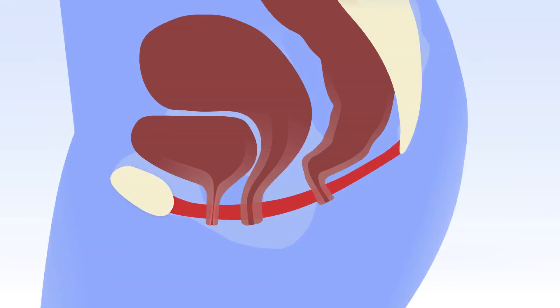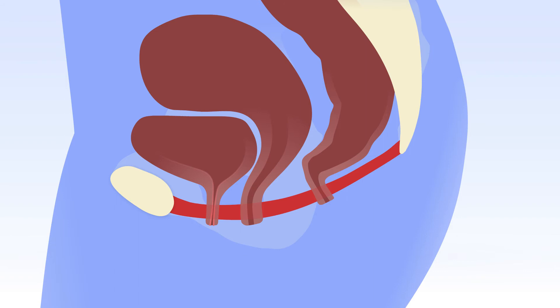One function of the pelvic floor is to support pelvic organs. Pelvic floor muscle tone depends on its active and passive components at rest. The tone of the pelvic floor muscle can be normal, hyper, or hypotonic.